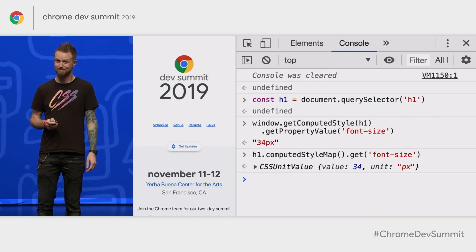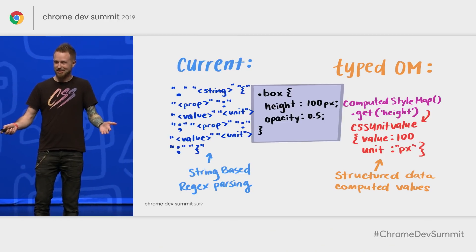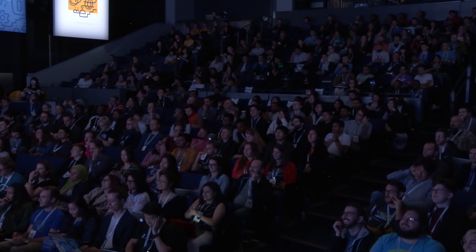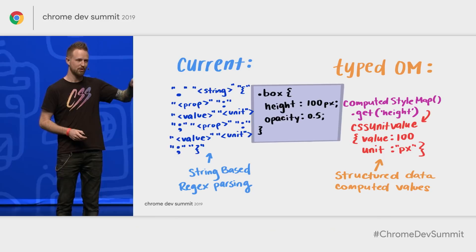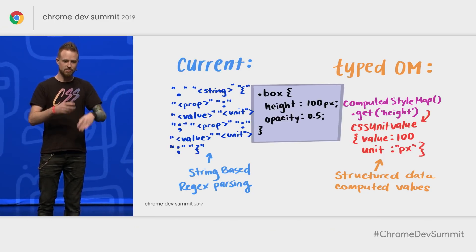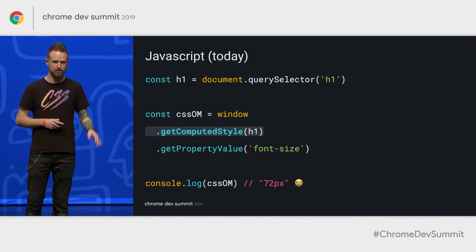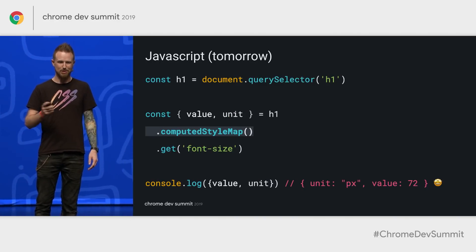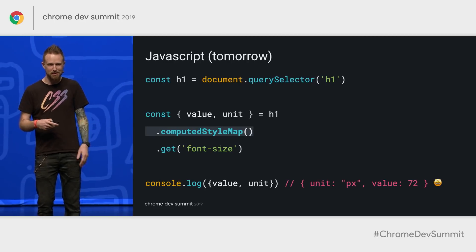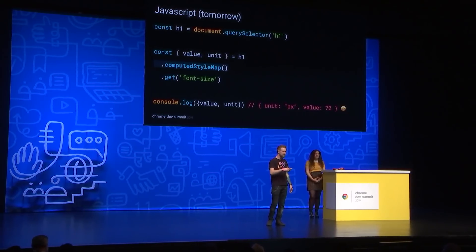Any design tool is really going to love this. If you're doing any JavaScript computation it's going to be really nice. On the left we have what we used to do: string-based regex parsing where you'd have to disassemble and reassemble. With Typed OM, you ask, you math, you set. The JavaScript of today asks the window for a computed style of an H1 and its font size. But tomorrow you can just ask the H1 for a style map and a get call for its font size. You also get conversion, clamping, error handling, and more.